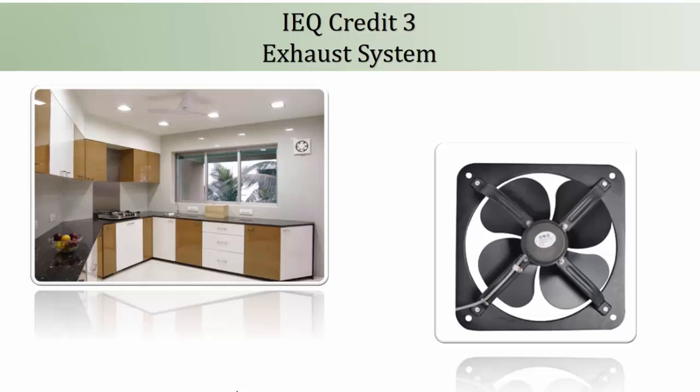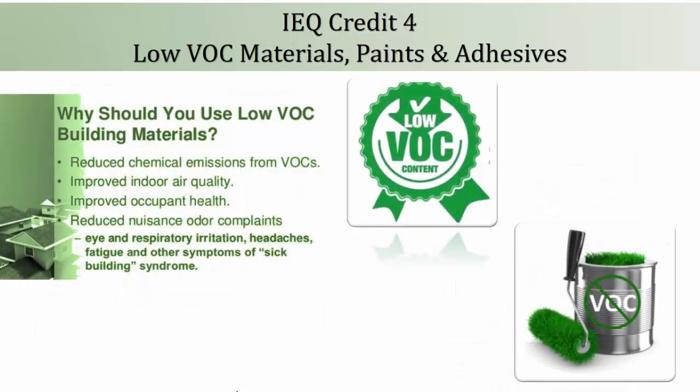IEQ Credit 4: Low VOC Material — Paint and Adhesives. This is the fourth credit of this section and awards 2 points. One point will be awarded when paint and coating with no or low VOC is used for 100% of interior walls and ceilings. Another one point will be awarded if the adhesives and sealants used within the interior have VOC content within the limits as specified in the guideline under the same credit.